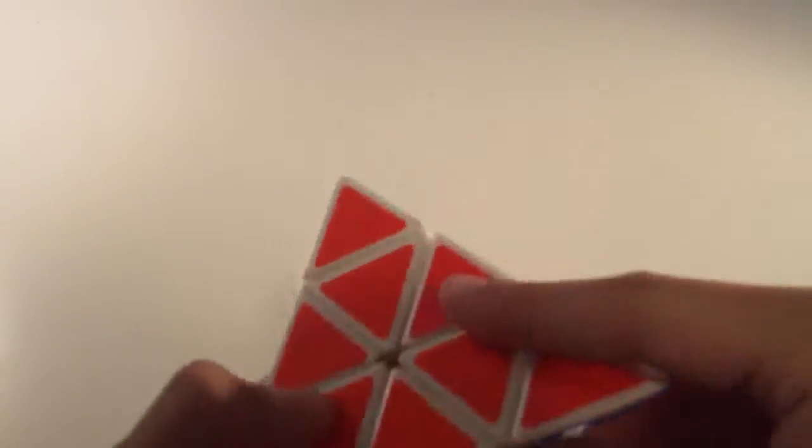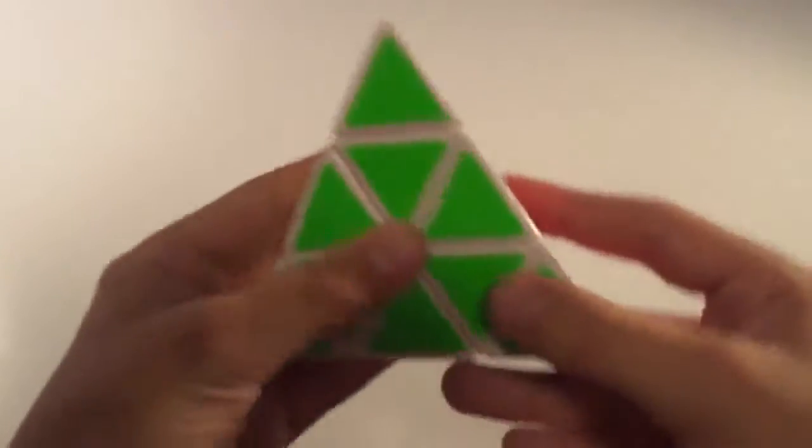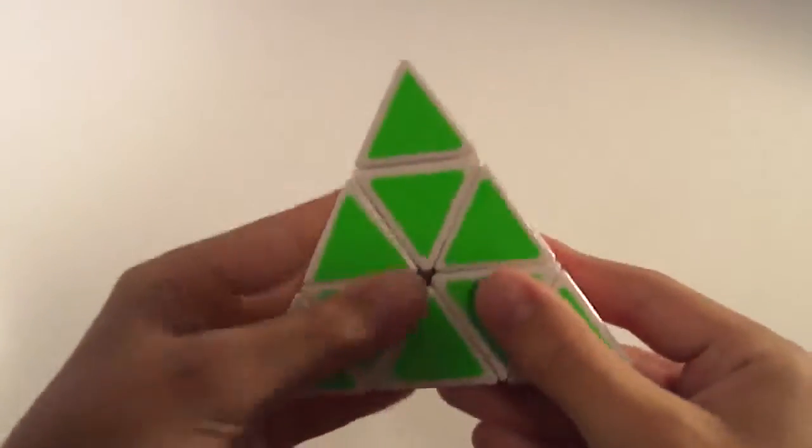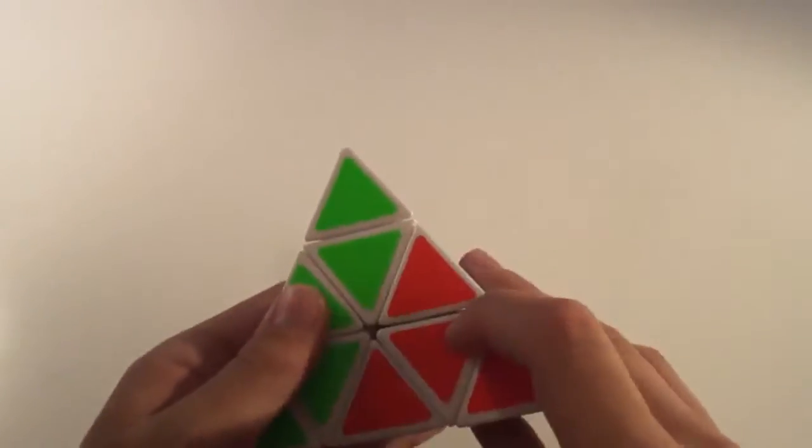So R would be moving this part, L is this part, U, and B. So R, right, which would be this part, if you see the letter R, that would mean to move this part of the Pyraminx up, like that. And R prime, which would be an R with an apostrophe after it, would mean to move this part down. So R prime would be this. R, R prime.